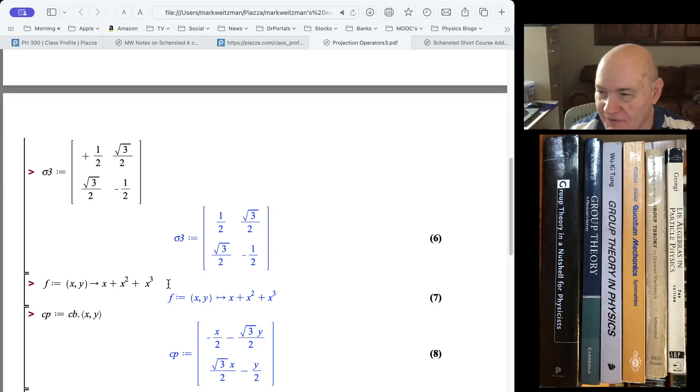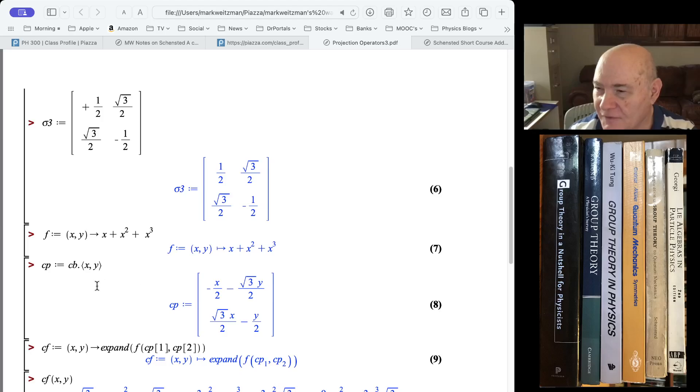Anyway, you can also just check that it works, and you can check that it's orthogonal and has determinant minus 1. That guarantees it's a reflection. So that's sigma 2, and that's sigma 3. Now, the example I chose is I take a function f.